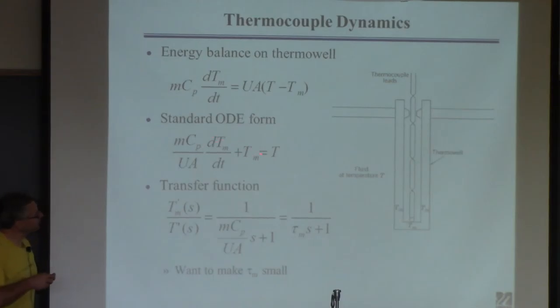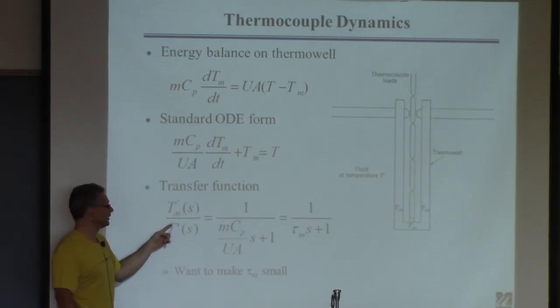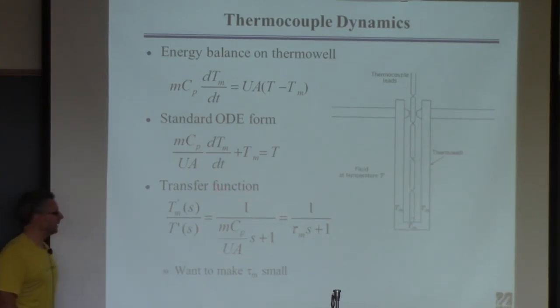So what did I do to find the transfer function? I found a deviation model, took a Laplace transform, and rearranged it. It's the same thing we always do. You'd see you get something that looks like a first-order transfer function with a gain of one and a time constant of tau.